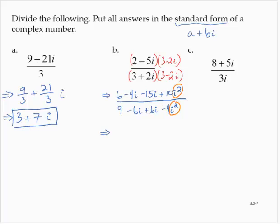So I'd have 6 minus 10, negative 4, and then I have a minus 4i and a minus 15i. So that's a minus 19i. In the denominator, I would have 9 plus 4, which is 13. And the minus 6i and the plus 6i go to 0.